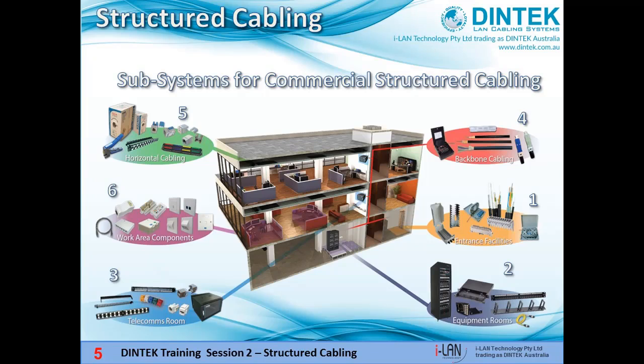In our last webinar we started looking at structured cabling subsystems summarised in this diagram. Number one in orange is our entrance facilities, leading to number two in purple, which is our equipment rooms, which lead to our telecommunications rooms in light blue. The cabling connecting these areas is called backbone cabling, and the last leg joining telecommunications rooms to work area components is called horizontal cabling.